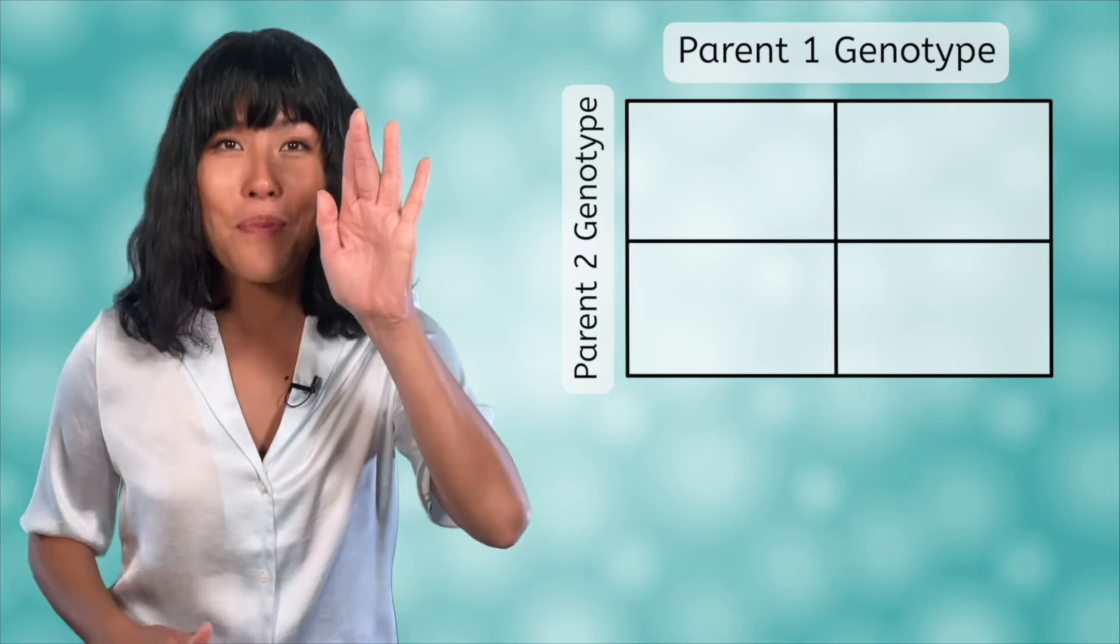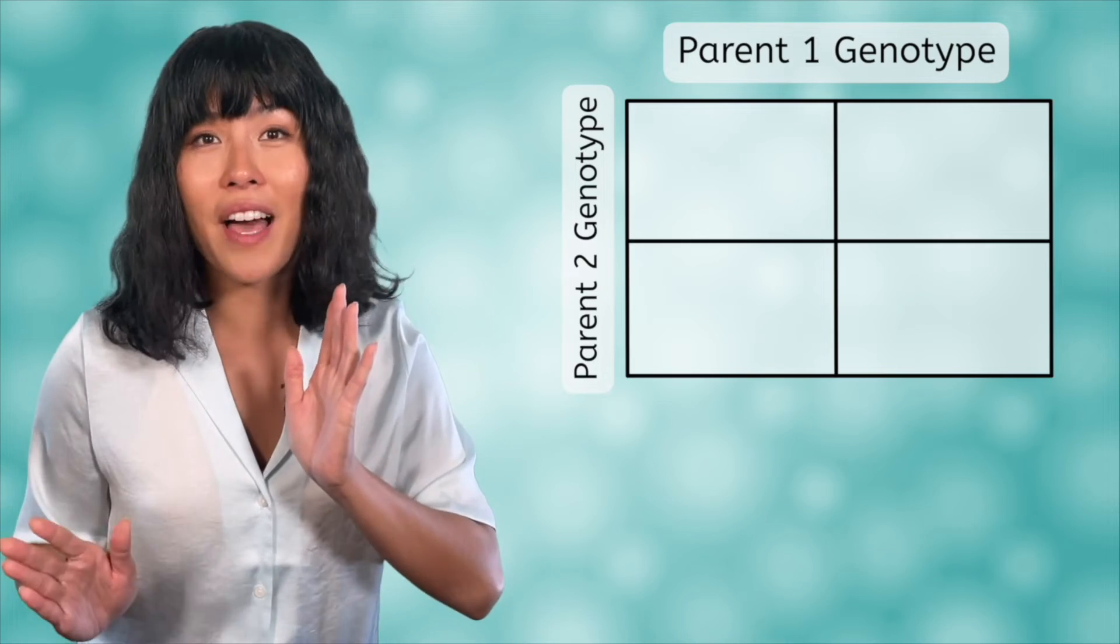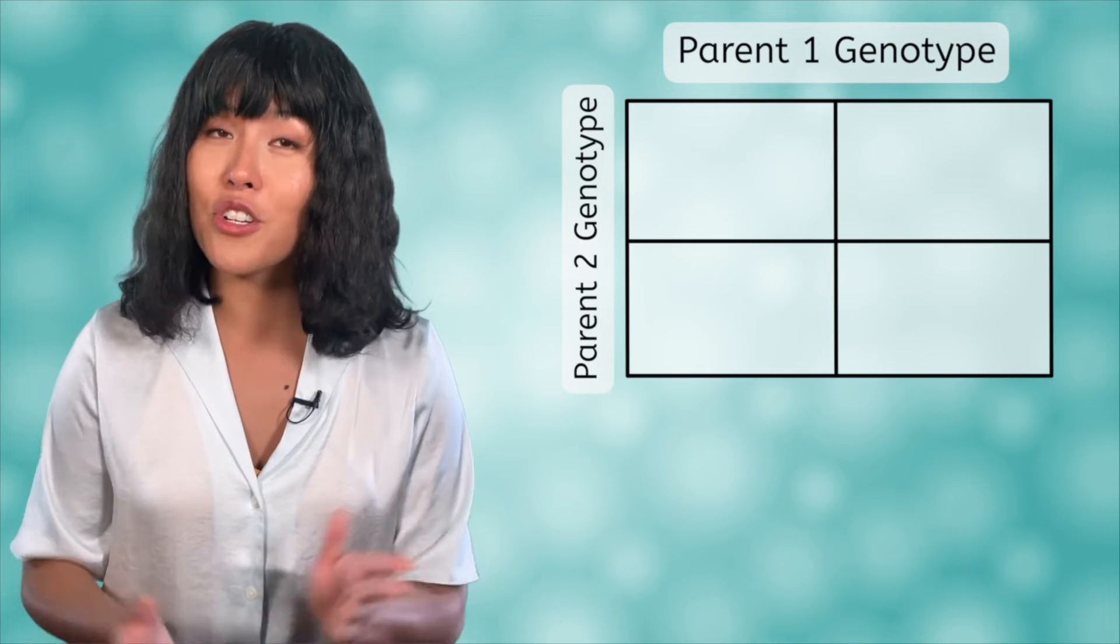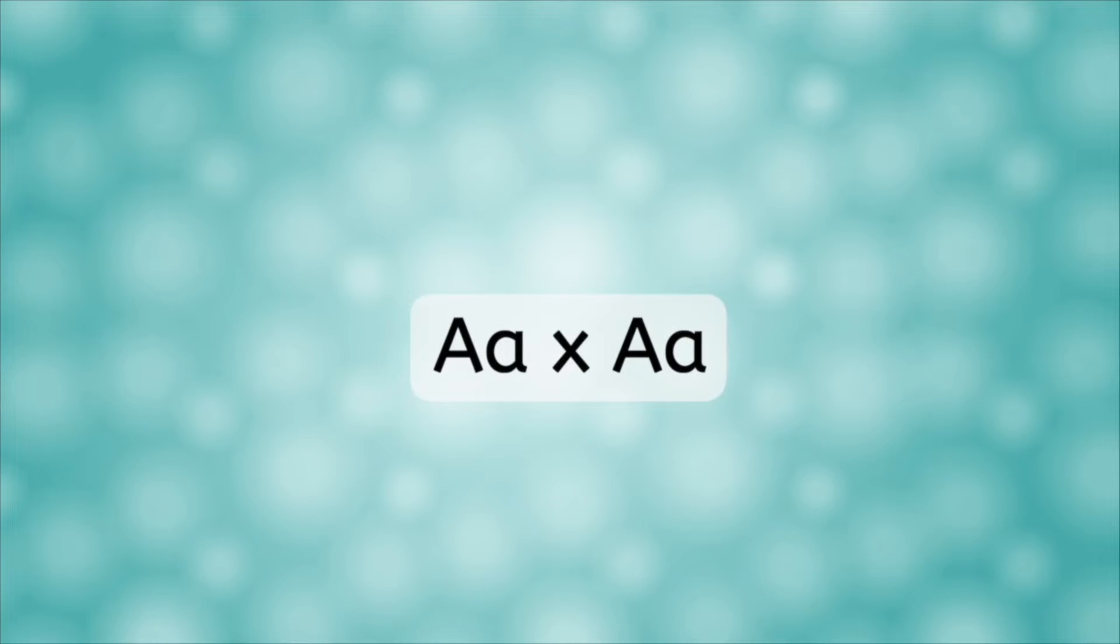A Punnett square is a visual representation of what genotypes the offspring of two parents could possibly have. The first thing to consider when setting up a Punnett square is the genotypes of the two parents. These will be placed at the top and the left of the square. It doesn't matter which parent goes on top or on the left, the results will always turn out the same either way.